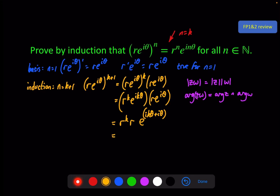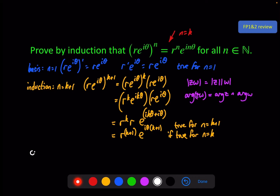Since R is not a complex number, R^k times R gives us R^(k+1). And we can factorize iθ out of the exponent to get e^(i(k+1)θ). We've shown this is true for n equals k plus 1 if it's true for n equals k, and we know it's true for n equals 1, so the conclusion is that it is true for all positive integers.